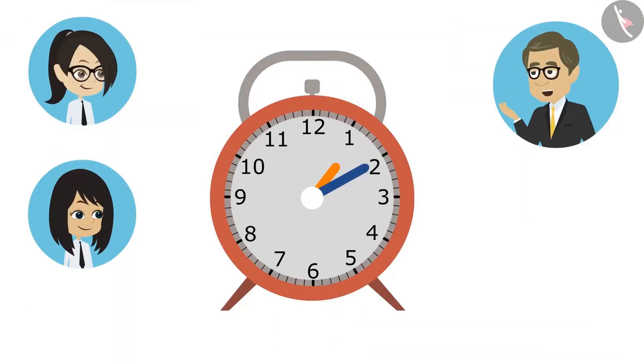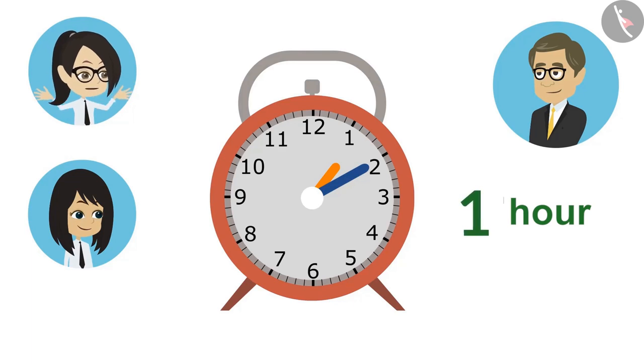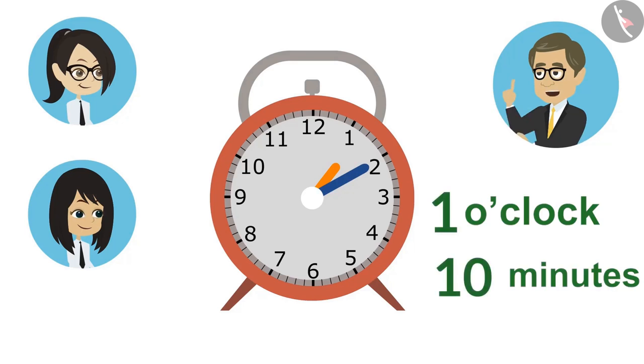Can you tell by looking at the clock what time it is? Let's try, sir. The hour hand is on 1 in this. It means it's 1 o'clock. And sir, the minute hand is on 2. It means it's 10 minutes. You both have said it right. Now we will tell the time by putting together the hour hand and the minute hand. That means it is 10 minutes past 1.